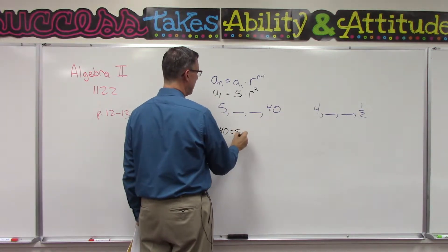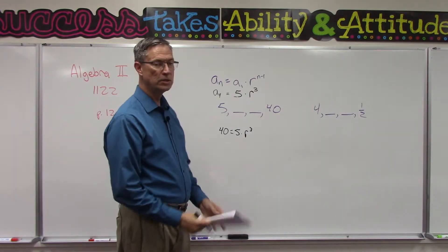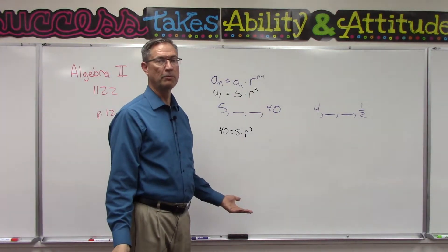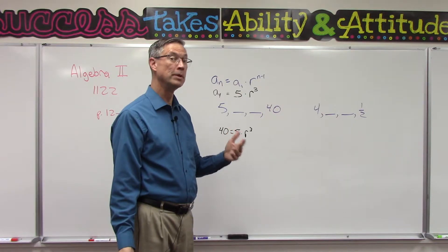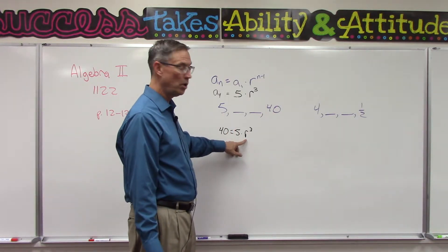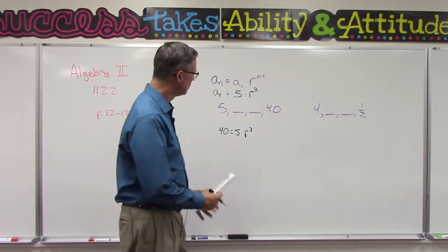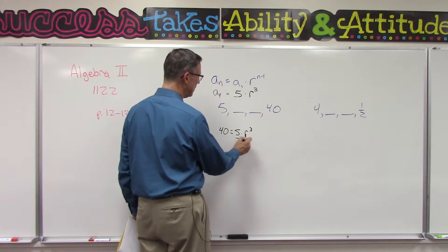Now this is just an algebra problem. It's been several months since you did algebra problems, but we're solving for this variable r, and it's to the third power and I have 5 times that. So we're going to undo what's being done to that by dividing both sides by 5.